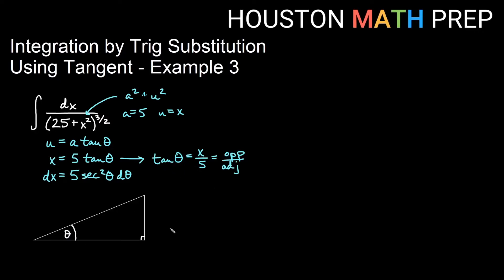So if my theta is here, then opposite will go here, and adjacent will go here, and my third and final side, this squared plus this squared equals this squared, I will get that my hypotenuse is the square root of 25 plus x squared.